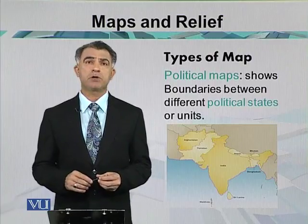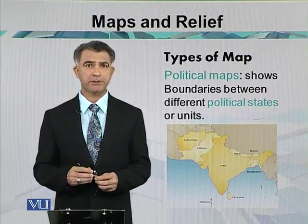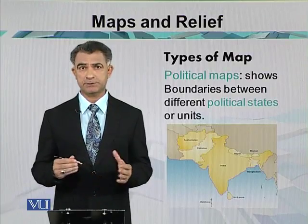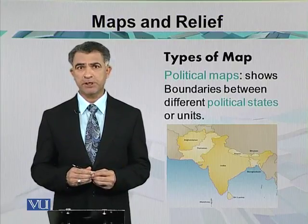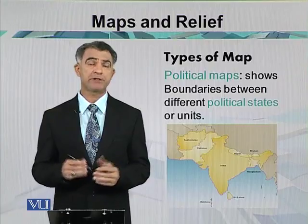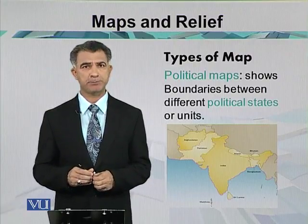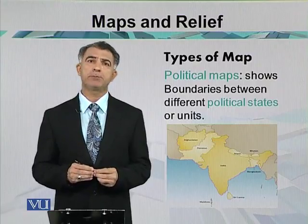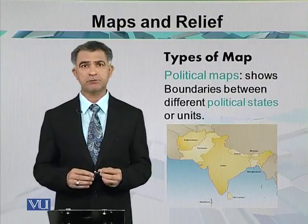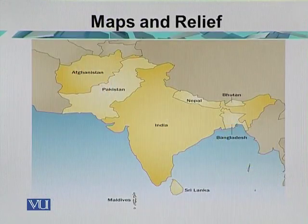First, we will discuss the political maps. These maps are made according to purpose. The political boundaries of the maps are very important here. Every country has its own political autonomy, and that is why these maps are made. As an example of the South Asian region, South Asia has eight major countries like Afghanistan and Pakistan.